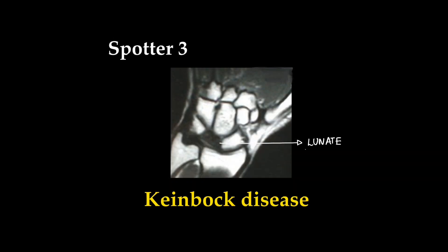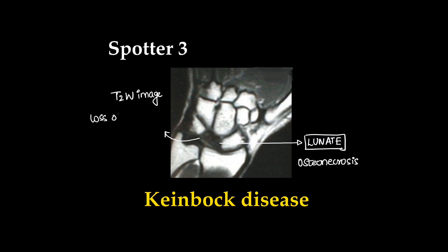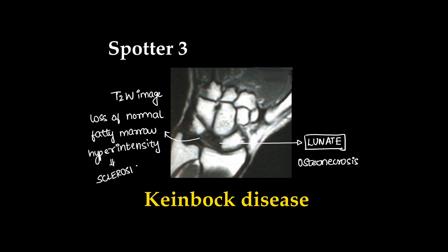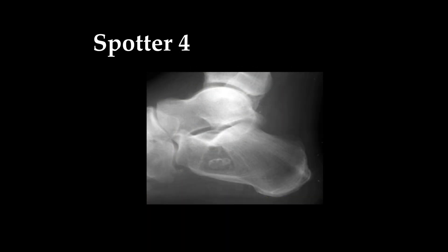This was Kienböck's disease, nothing but osteonecrosis of the lunate. Here we can see this is a T2 image where there is loss of normal fatty marrow hyperintensity, which shows there is sclerosis of the bone.